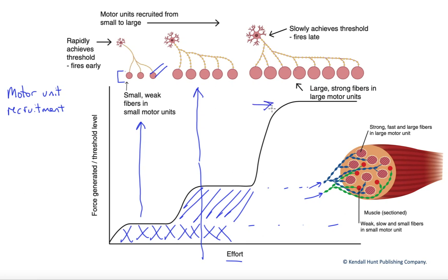That is called the size principle of motor unit recruitment. We activate our motor units based upon their sizes and the sizes of their motor neurons in sequence, recruiting them in order to generate different degrees of tension.